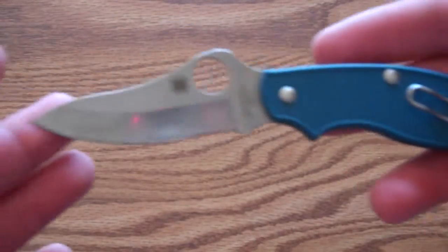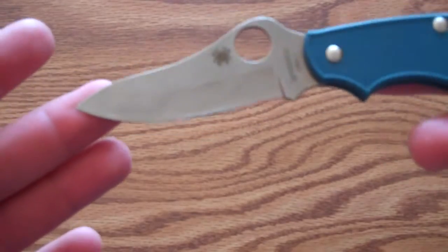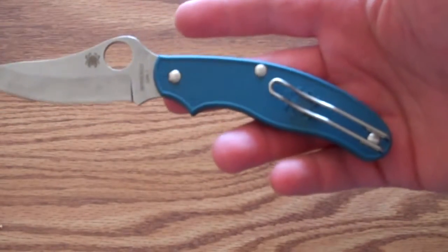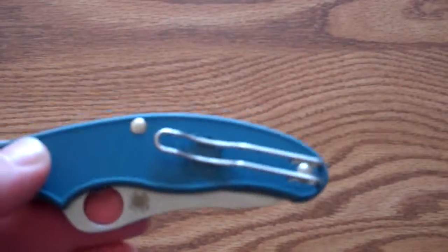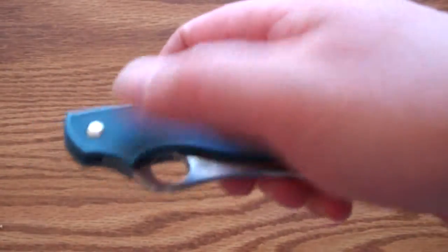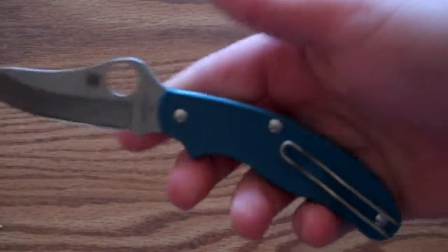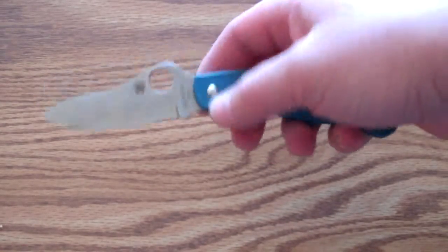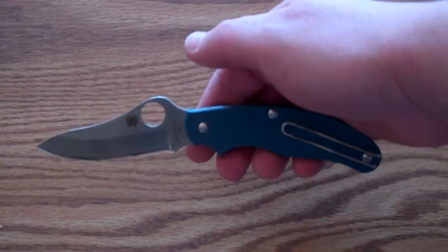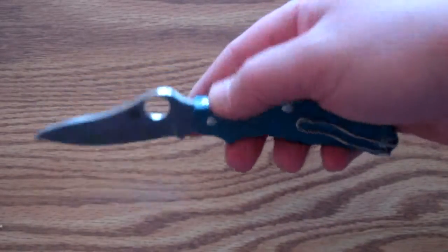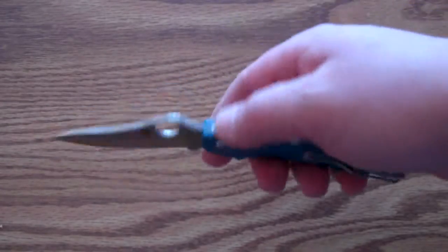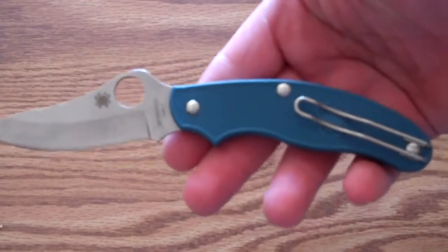So let's go over some of the specs. I already mentioned Gen 1 steel. It's overall 6.93 inches, it's closed length is 4 inches, slightly over it. Blade thickness is 1.25 or about 3 millimeters. Blade length is 2.93 and cutting edge is 2.62, so a little over 2.5 inches. And again, it's FRN handle material.